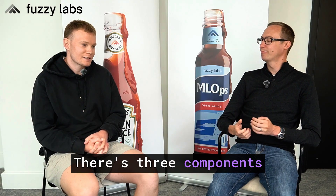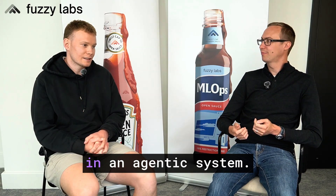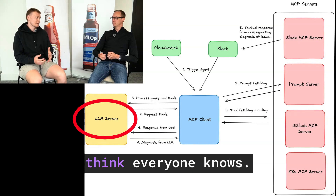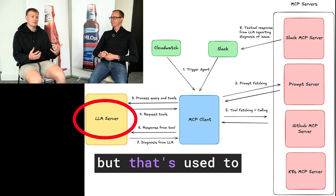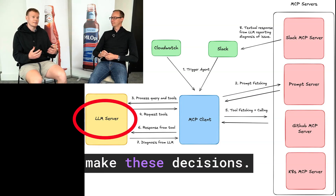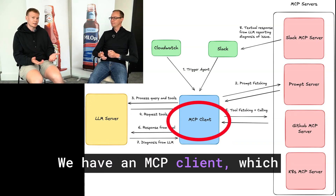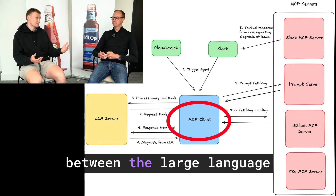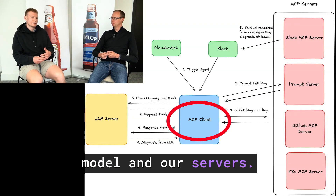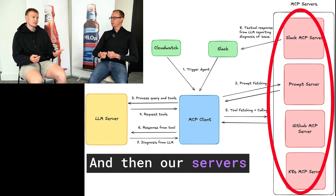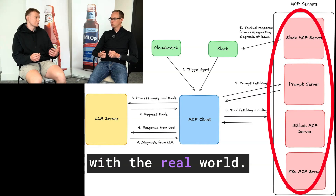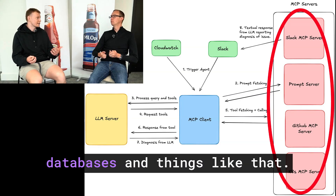There are three components in an agentic system. We have our large language model, which is used to make decisions. We have an MCP client, which acts as an intermediary between the large language model and our servers. And then our servers are a way to interact with the real world — so these could be APIs or databases and things like that.